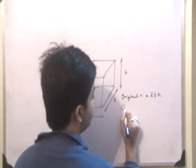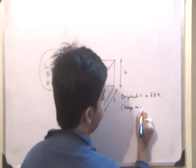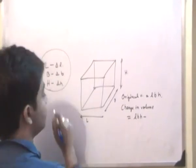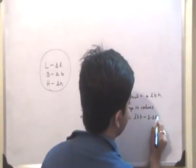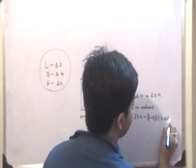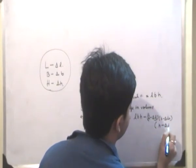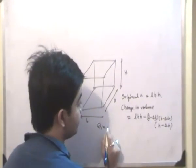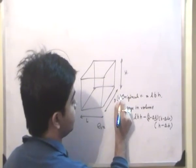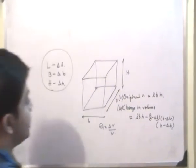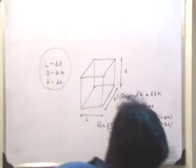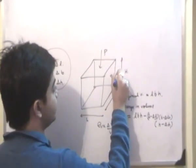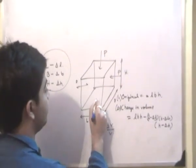So the change in volume will be equal to the original volume LBH minus (L - δL)(B - δB)(H - δH). And εᵥ, which is known as the volumetric strain, is this change in volume, δV, divided by the original volume. So this is the overall concept of volumetric strain. And this compressive pressure is applied from all sides.